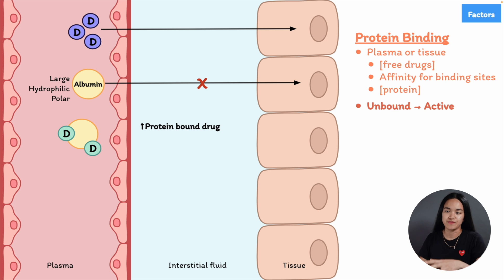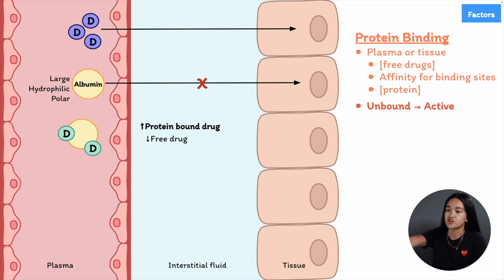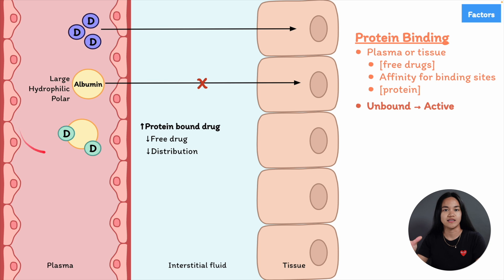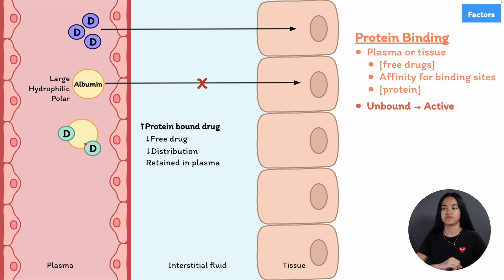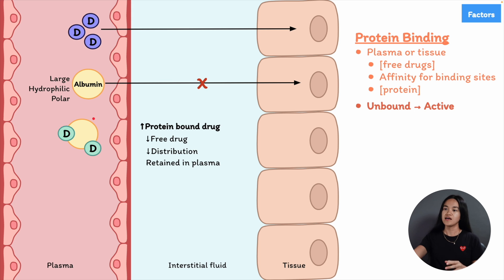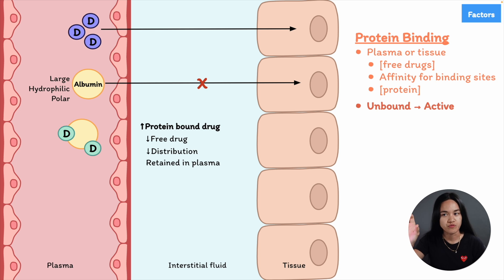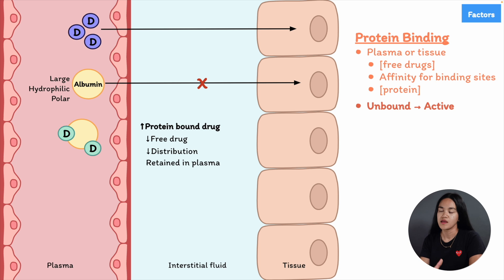For a drug that is highly protein bound: firstly, the amount of free drug decreases, so the amount distributed to tissues decreases — distribution goes down. Additionally, because the drug binds strongly to plasma proteins and plasma proteins can't leave the bloodstream, the drug is retained in plasma, resulting in an increase in the drug's plasma concentration. To recap: if a drug binds significantly to plasma proteins, it will be retained in plasma and distribution will decrease.